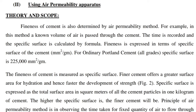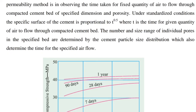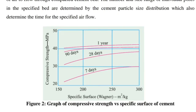Finer cement offers a greater surface area for hydration and hence faster development of strength. Specific surface is expressed as the total surface area in square meters of all the cement particles in one kilogram of cement. The higher the specific surface, the finer the cement will be. The principle of the air permeability method is observing the time taken for a fixed quantity of air to flow through a compacted cement bed of specified dimension and porosity. Under standardized conditions, the specific surface of the cement is proportional to T^0.5, where T is the time for a given quantity of air to flow through the compacted cement bed. The number and size range of individual pores in the specified bed are determined by the cement particle size distribution, which also determines the time for the specified air flow. Figure 2 shows the graph of compressive strength versus specific surface of cement.